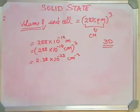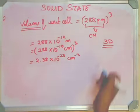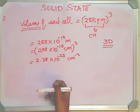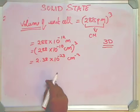This gives 2.38 multiplied by 10 to the power of minus 23 centimeter cube. I'm able to do this because I use a scientific calculator. I strongly advise that you do not do this on paper, or if you're good at Excel, go ahead and do it on Excel.